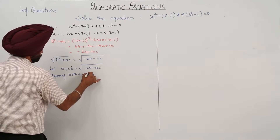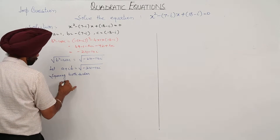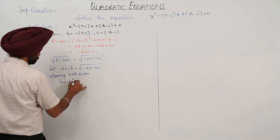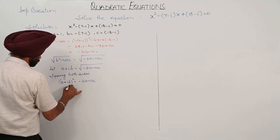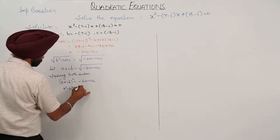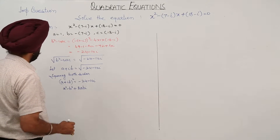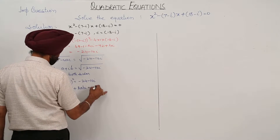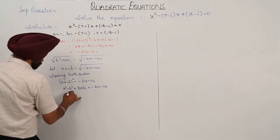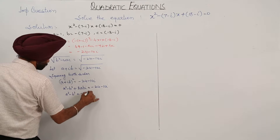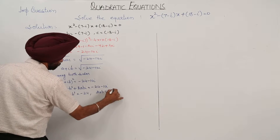Squaring both sides: (a + ib)² = -24 - 10i. Expanding: a² - b² + 2abi = -24 - 10i. Equating real and imaginary parts: a² - b² = -24 and 2ab = -10.